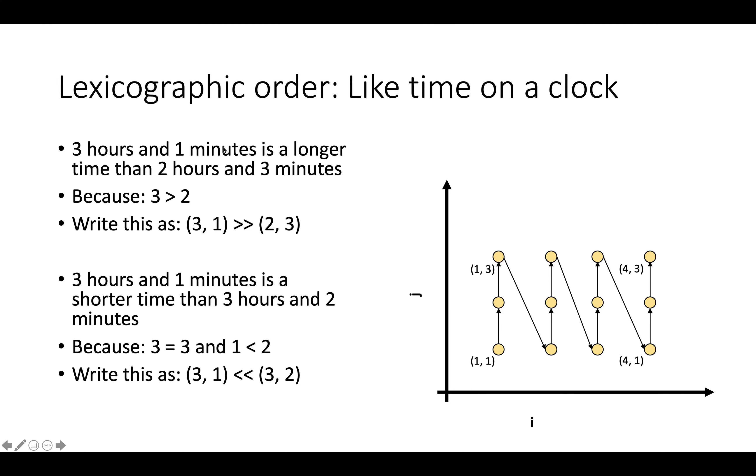So, for example, if we think of i and j as hours and minutes, we might say, for example, the point (3,1), 3 hours, if the outer loop is hours, and 1 minute, which is right here, is a longer time, or is before (2,3), 2 hours and 3 minutes, because 3 hours is greater than 2 hours.